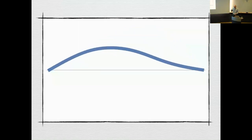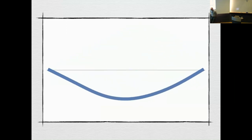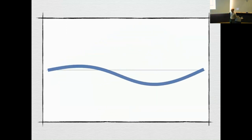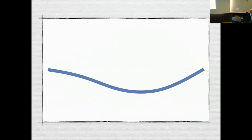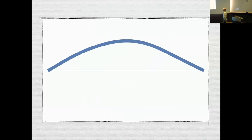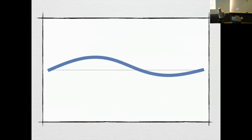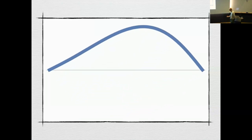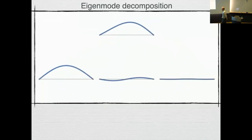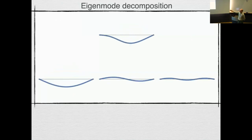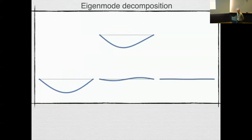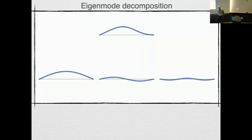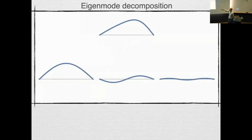I want to start with the guitar string. What happens when you pluck the string of a guitar? Here's a simulation where I plucked it about a third of the way along. You get quite complicated motion — it's periodic in time, but spatially quite complicated. Mathematically, it's convenient to decompose this motion into simpler modes. I can get the complicated motion by adding together three simpler motions, each much easier to describe mathematically — this is known as an eigenmode decomposition.